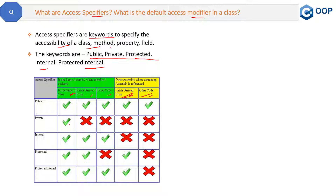The next one is private. Private is accessible or available only within the same class and nowhere else. Inside derived classes, other code, or other assemblies — it is not accessible.